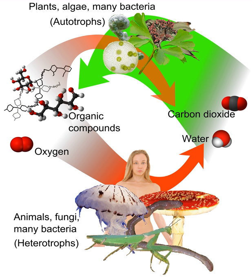Plants convert and store the energy of the photon into the chemical bonds of simple sugars during photosynthesis. These plant sugars are polymerized for storage as long-chain carbohydrates, including other sugars, starch, and cellulose. Glucose is also used to make fats and proteins. When autotrophs are eaten by heterotrophs, i.e., consumers such as animals, the carbohydrates, fats, and proteins contained in them become energy sources for the heterotrophs. Proteins can be made using nitrates, sulfates, and phosphates in the soil.